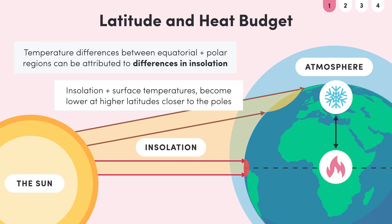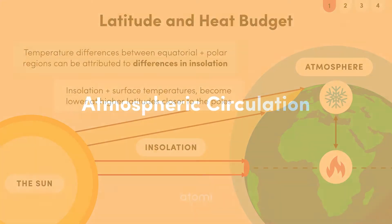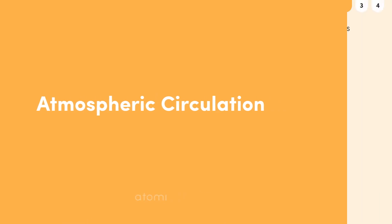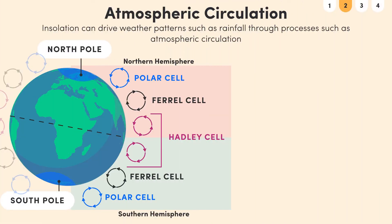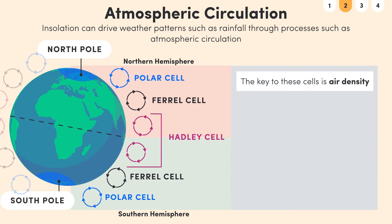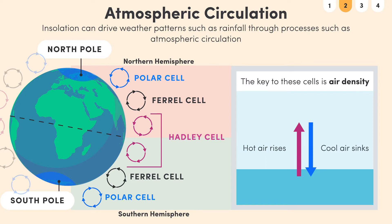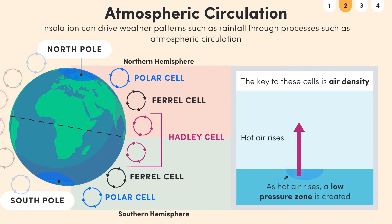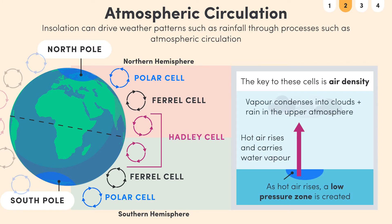Now we understand how insolation creates different temperature zones on earth, but how does it drive other weather patterns like rainfall? Well, let's start with atmospheric circulation, which occurs in a specific pattern. As you can see in this diagram, there are three cells of air circulation in each hemisphere. The key to these cells is air density. Essentially, hot air is less dense than cold air, so hot air rises and cold air sinks. As hot air rises, it creates a low pressure zone, and it also carries water vapour up with it, which then condenses in the upper atmosphere to form clouds and rain.